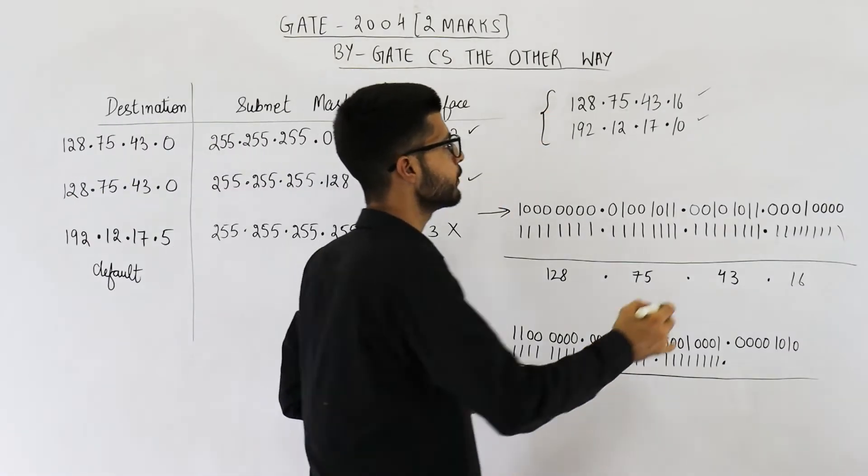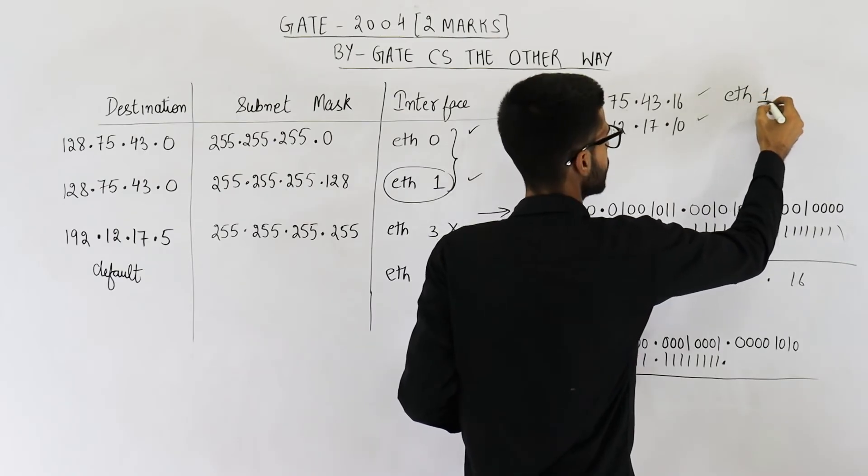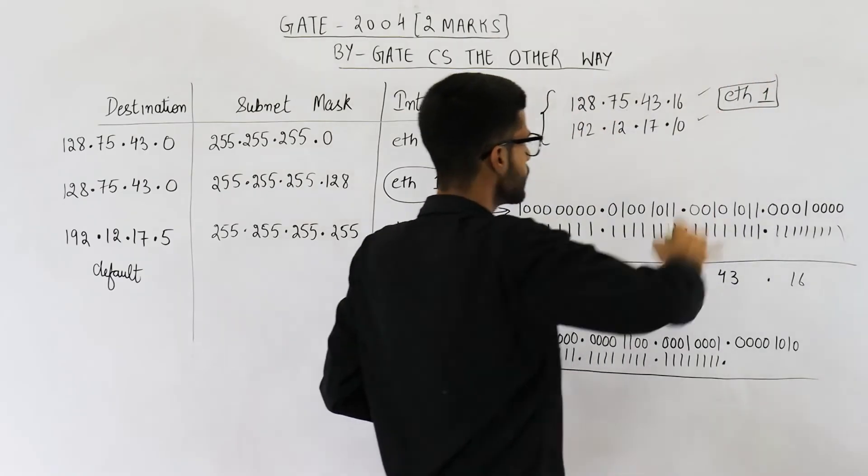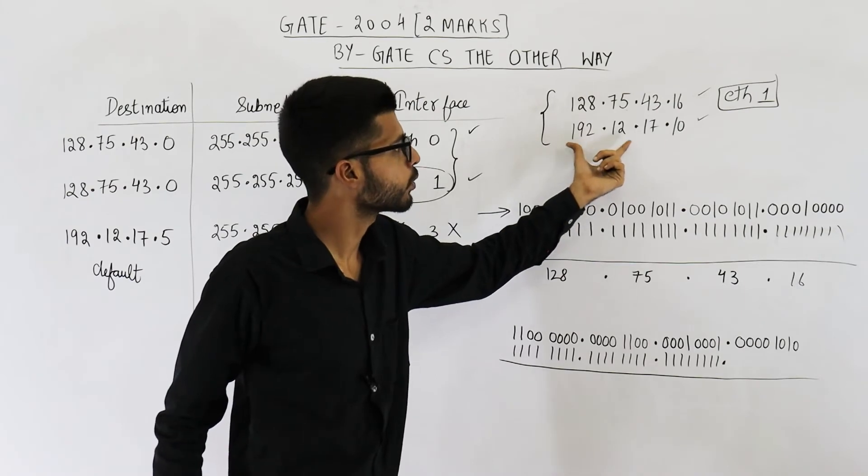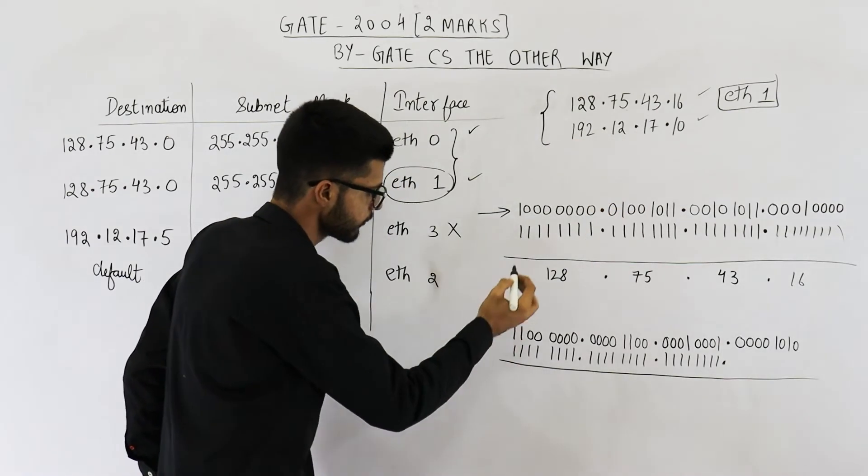So this packet is going to be forwarded to Ethernet 1. Now let us analyze this packet. It is 192.12.17.10. I've converted it to binary.